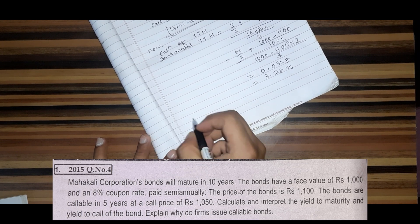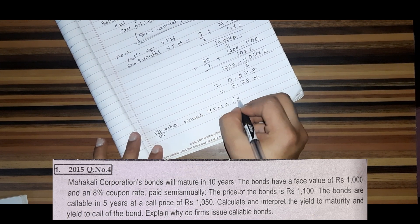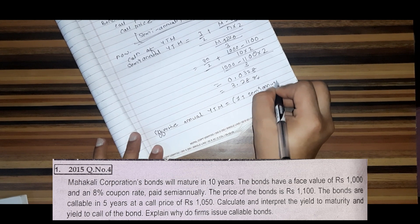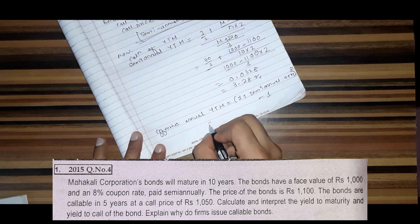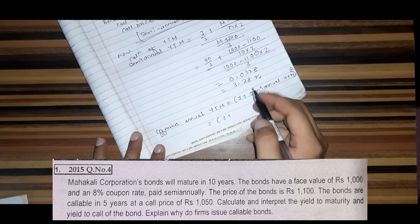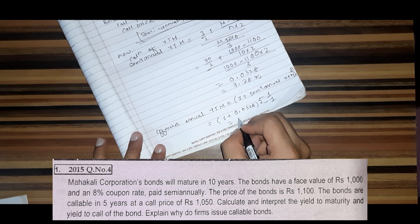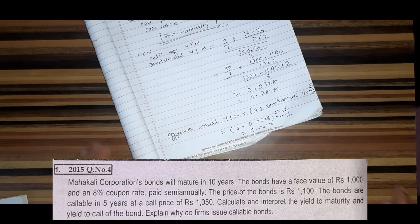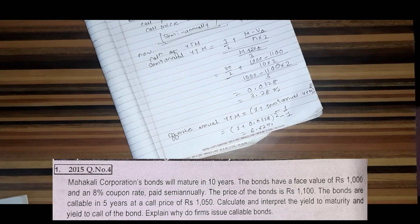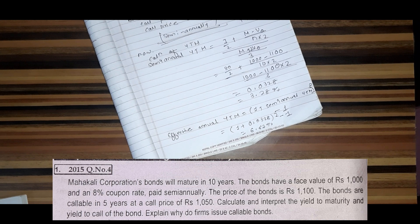The effective annual YTM equals one plus semi-annual YTM to the power of 2 minus one. One plus semi-annual YTM equals 0.0328, power 2 minus one. The answer is 0.067, which is 6.67 percent. This is the rate of return if the bond is held until maturity.